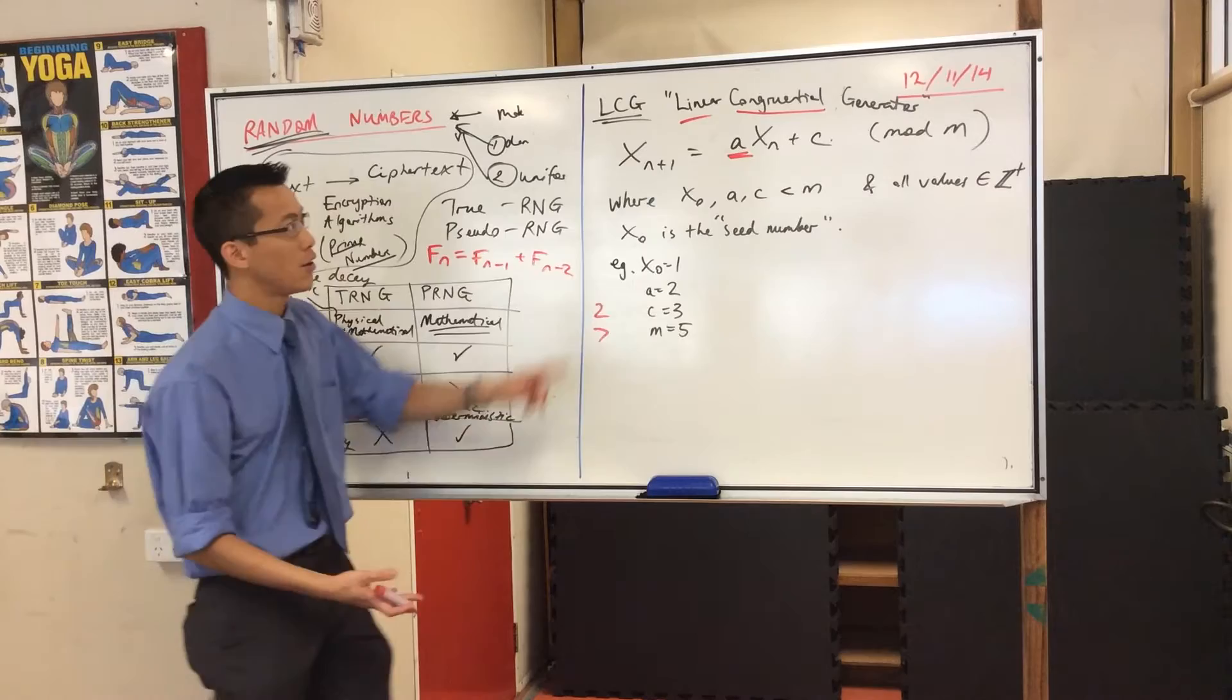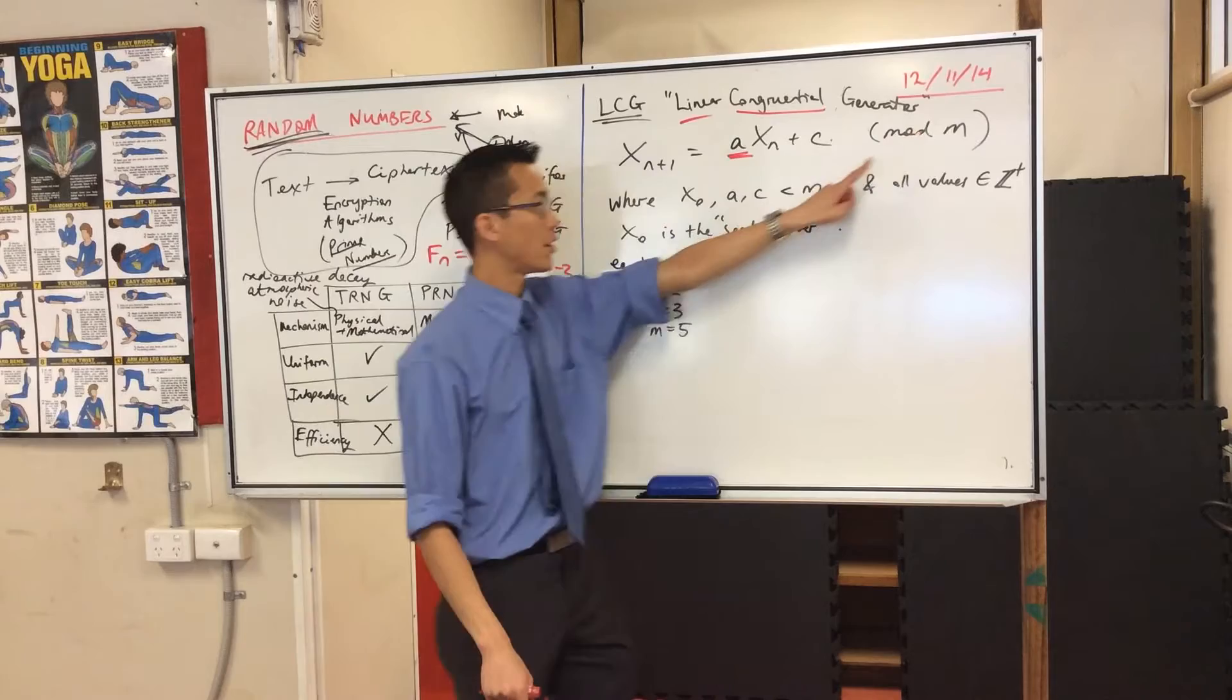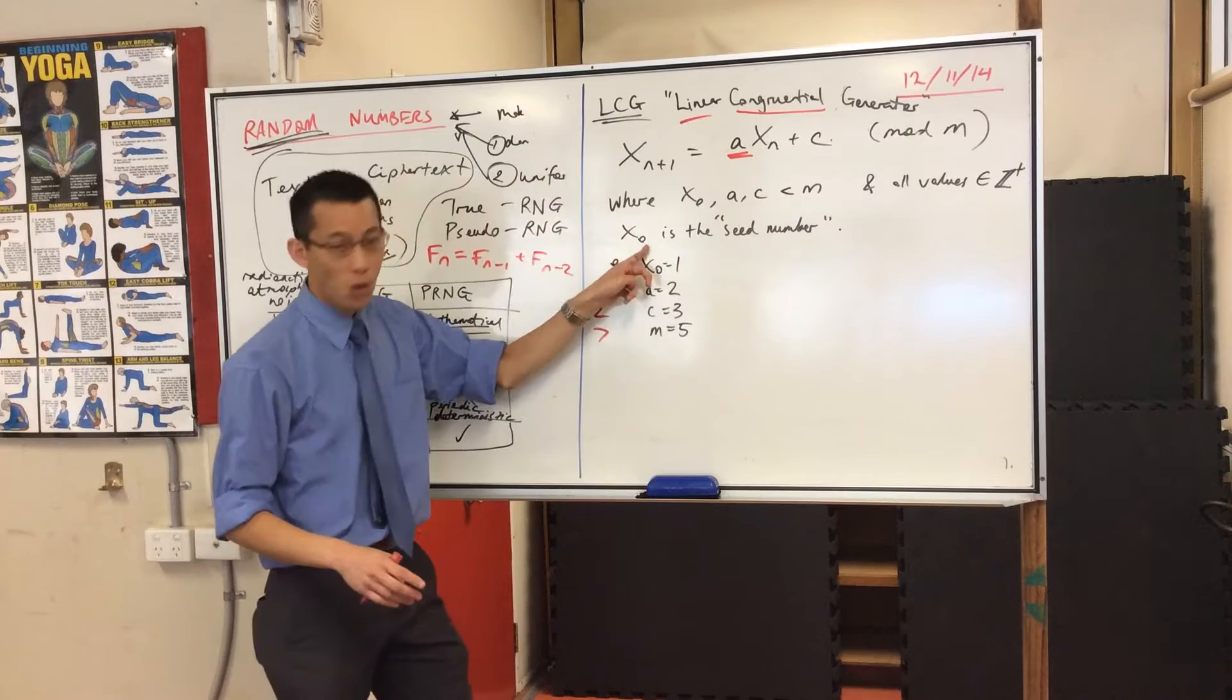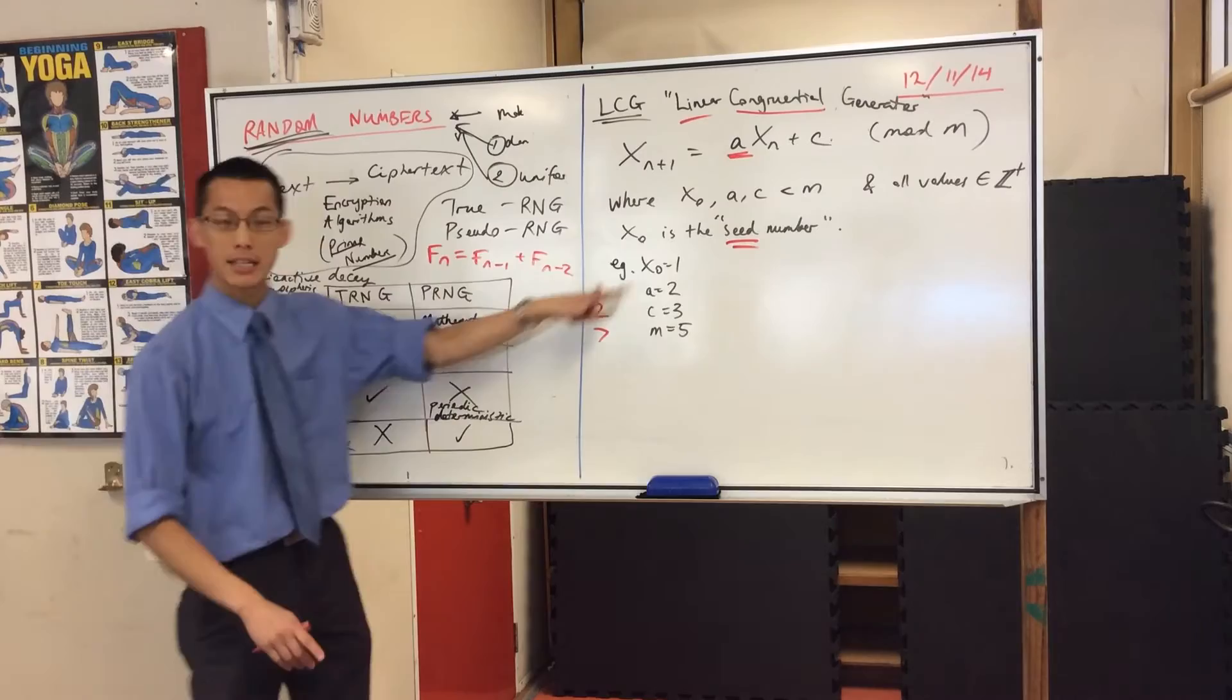This idea of congruence is really referring to the fact that it's using modular arithmetic. You need some conditions. You've got these three numbers, they've all got to be less than whatever you're going to take the modulus of. All the values have to be positive integers. x naught, that's a subscript not an index, is the seed number. It's what you start with, it's your starting point.